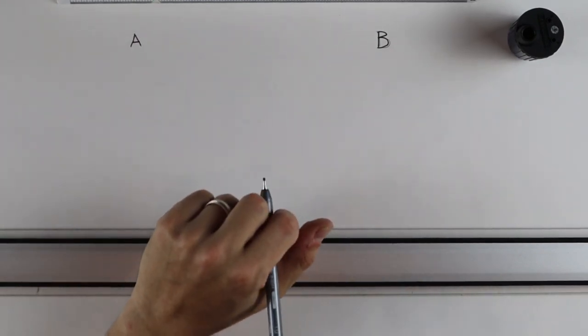There are two things that I want to go over and that's creating bold confident lines and keeping your drafting pencil at the proper angle. We're going to start with creating bold confident lines.